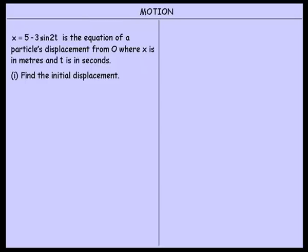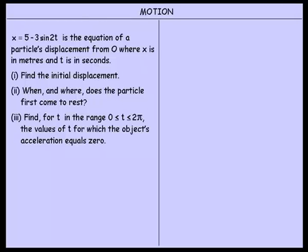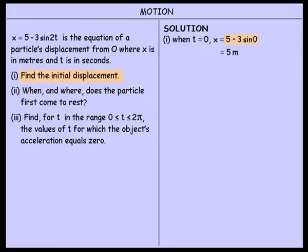Our first part, we're asked to find the initial displacement. Remember what the word initial means — it means when time equals 0. So we substitute t equals 0 into the displacement equation. We get x equals 5 minus 3 sine of 0, and that simplifies to be 5. So x equals 5 meters is the initial displacement.